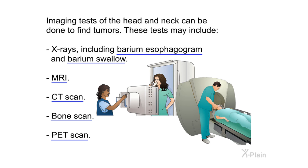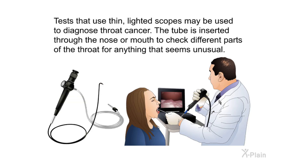Imaging tests of the head and neck can be done to find tumors. These tests may include X-rays, including a barium esophagogram and barium swallow, MRI, CT scan, bone scan, and PET scan. Tests that use thin lighted scopes may also be used to diagnose throat cancer. The tube is inserted through the nose or mouth to check different parts of the throat for anything that seems unusual.